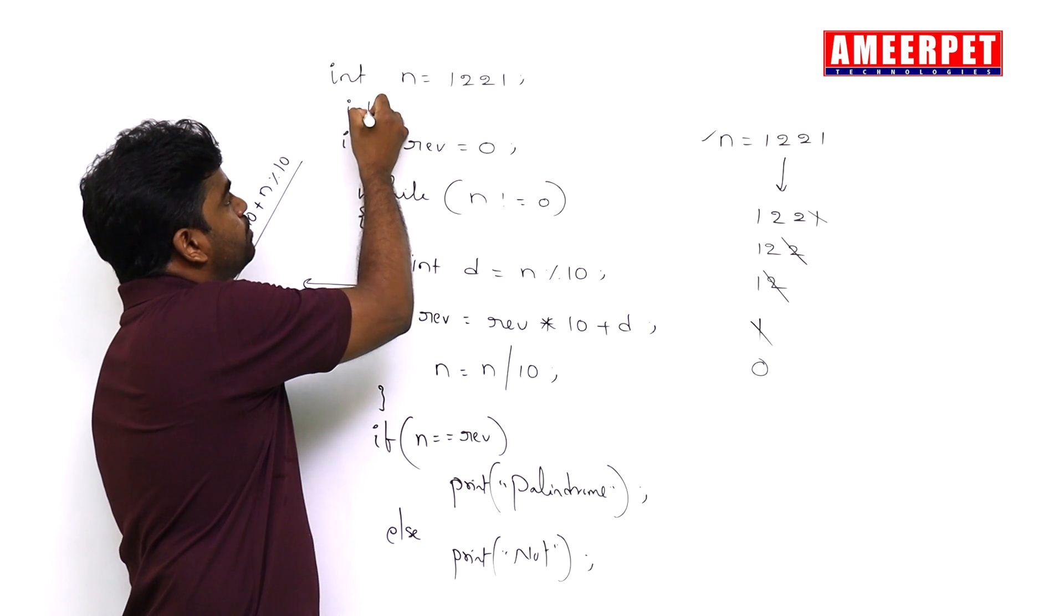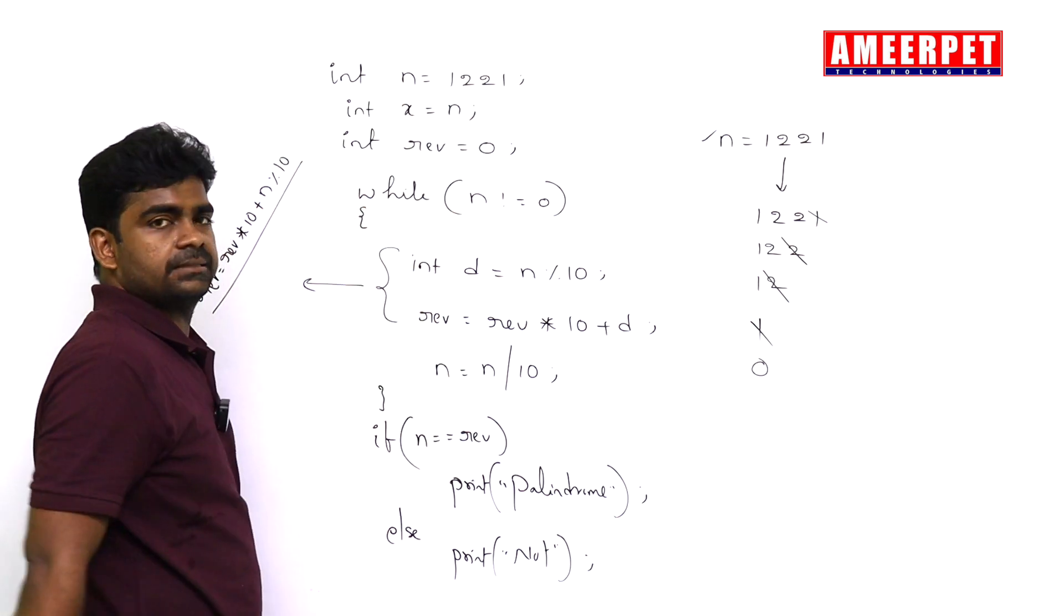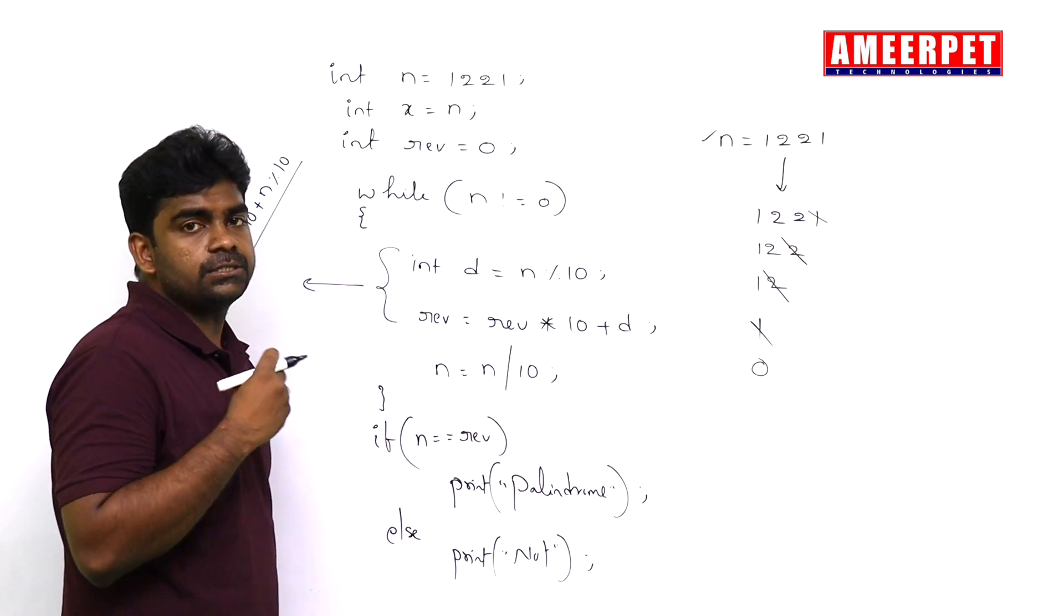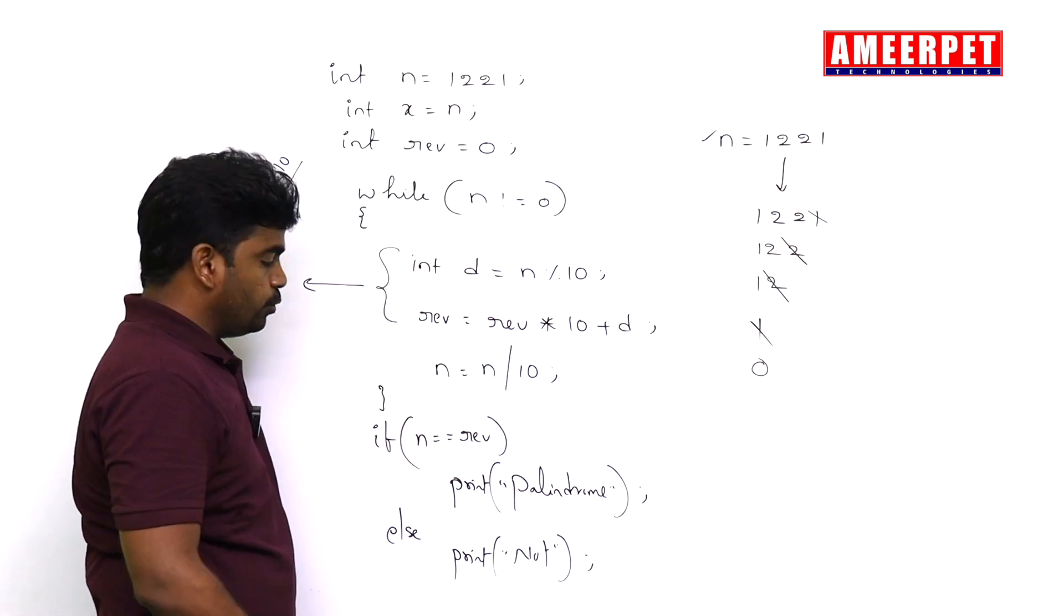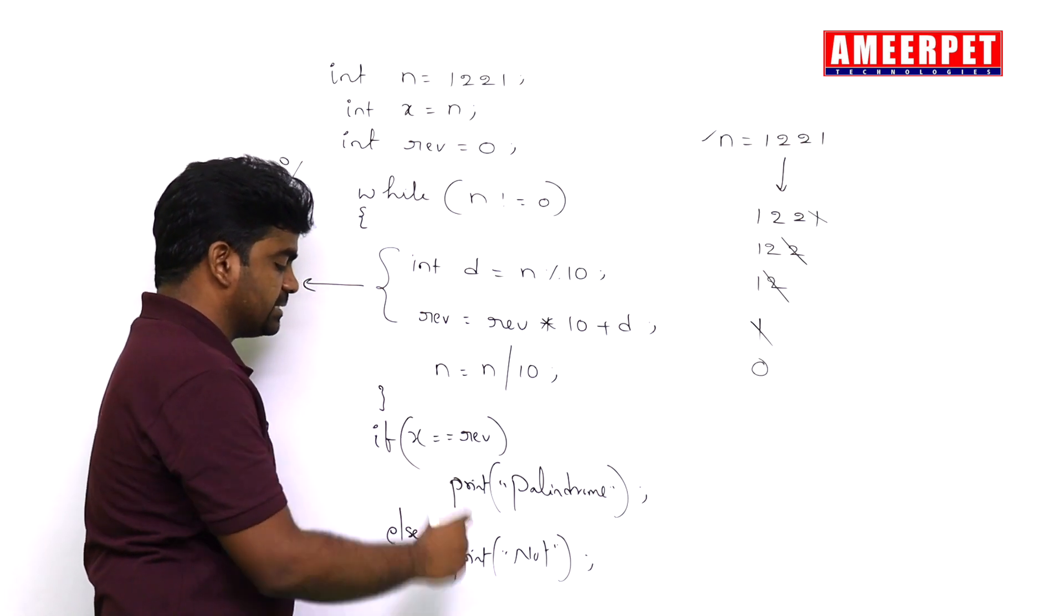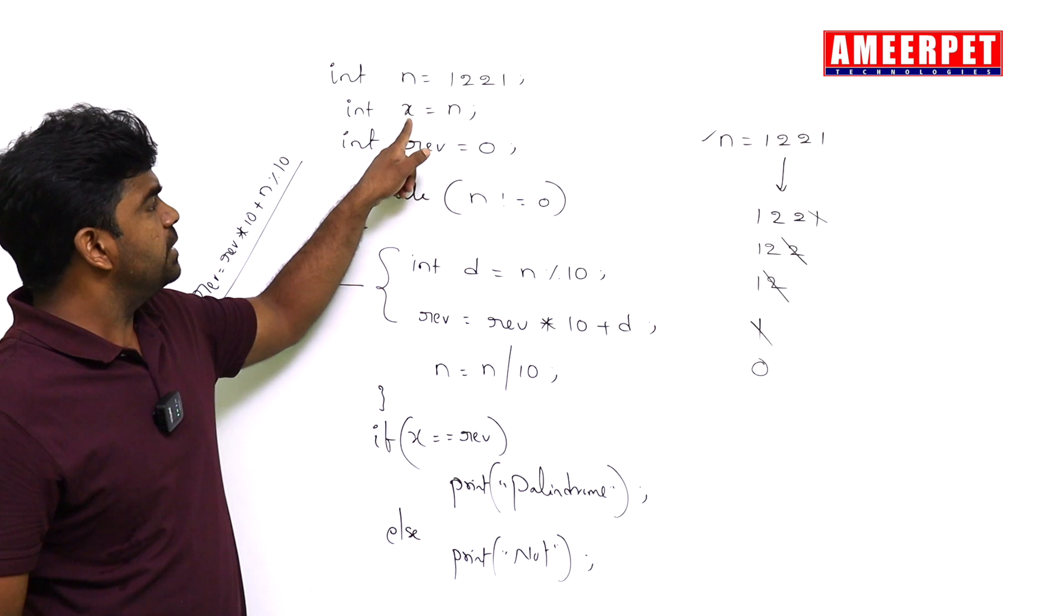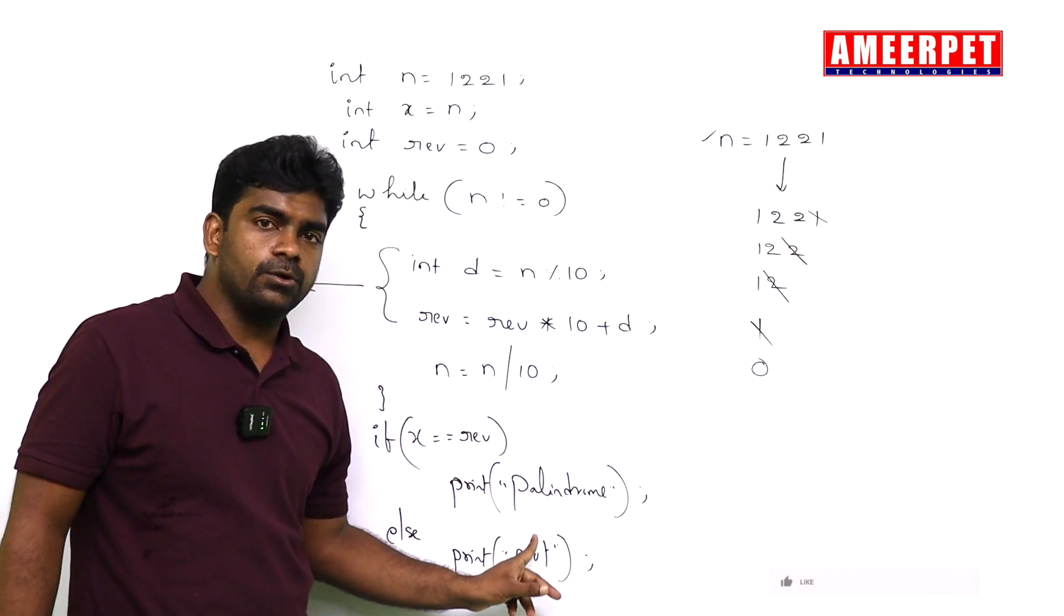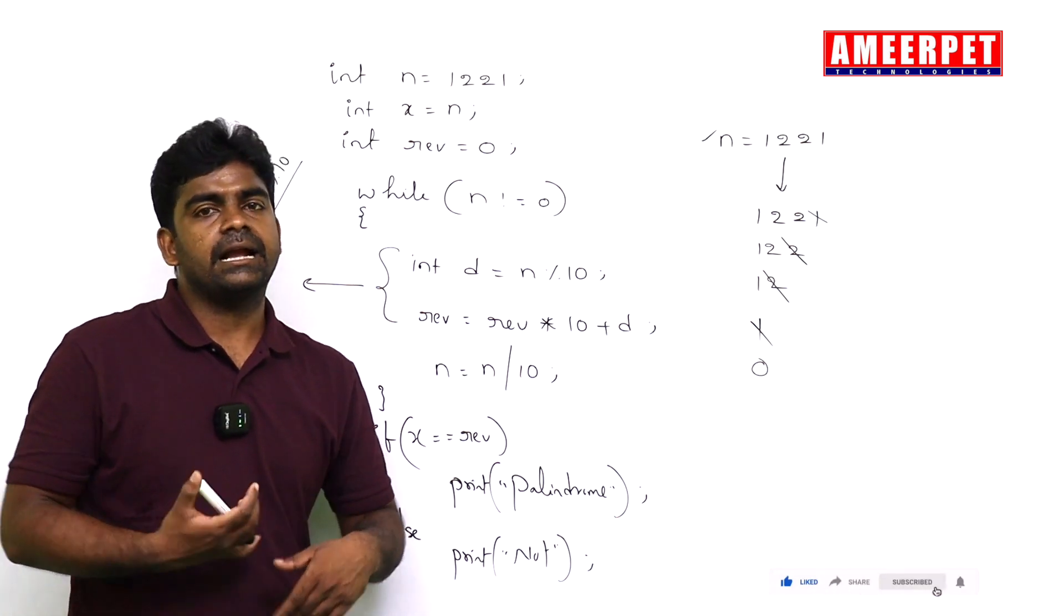That's why first, the n value you keep into one variable - any variable, suppose into x or into t or into any temporary variable you can store. So now x contains 1221. Here, instead of giving n, please give x. Now you will get the answer correctly. This is the one thing you need to do whenever we are checking whether it is a palindrome number. In other cases we will see in the coming videos.